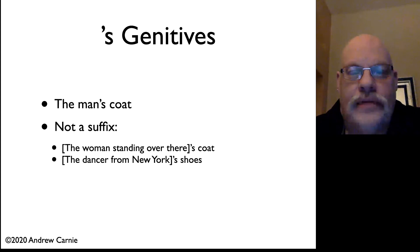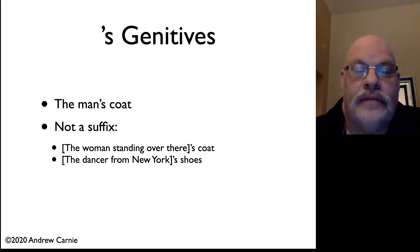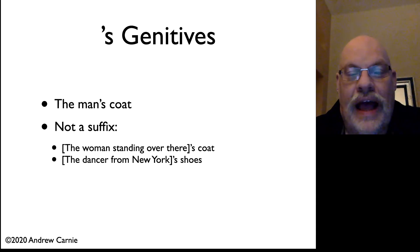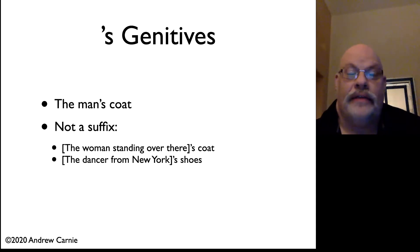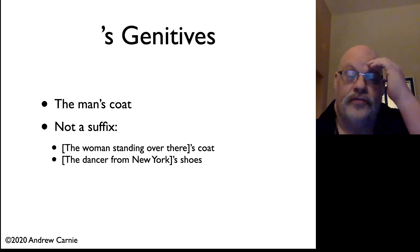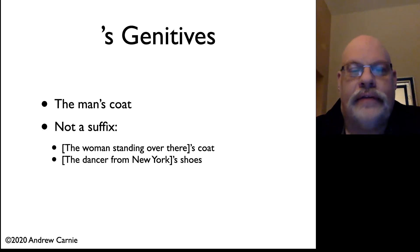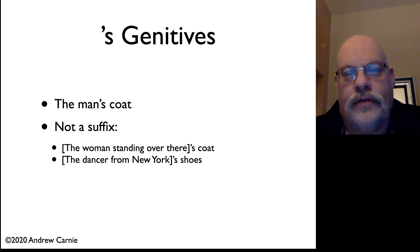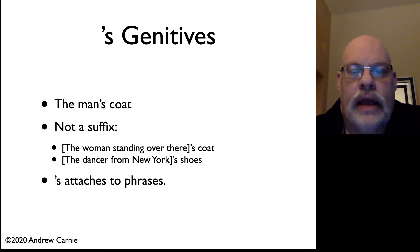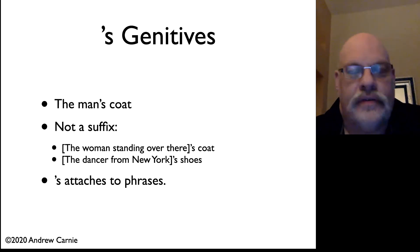However, there's a fair amount of evidence that this is not, in fact, a normal suffix. It doesn't always attach to nouns. For example, you can say "the woman standing over there's coat," and the apostrophe-S doesn't go on the head noun — it doesn't go on "woman." It goes on the last word in the phrase containing "woman." Similarly, "the dancer from New York's shoes" — that apostrophe-S goes on "New York," but clearly the possessive is associated with "dancer," not with "New York." This kind of structure is what's known as clitic. Clitics are affixes that seem to attach to phrases rather than to individual head words, and as such they mark the edges of certain kinds of phrases.